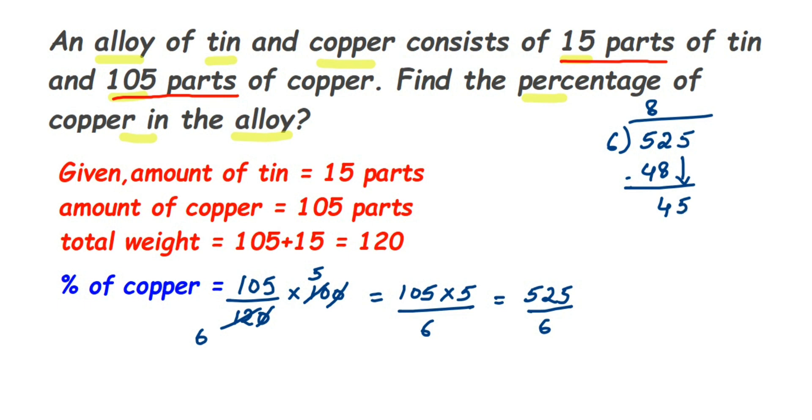So 6 7s is 42. So subtract it, 3 will be the remainder. Put the decimal point and take the 0 here. So 6 5s is 30. We got the remainder 0. So the answer is 87.5. So this is equal to 87.5.